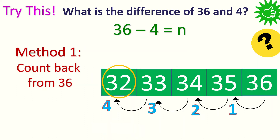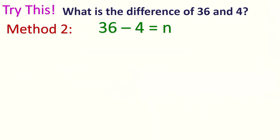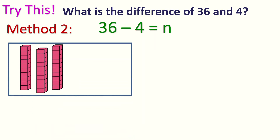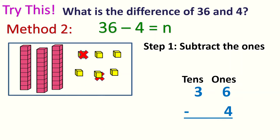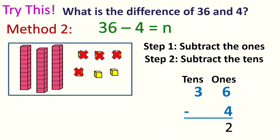Now, let's answer this using the second method. 36 is 3 tens and 6 ones. Let's write the subtraction sentence in vertical form. Subtract the ones: 6 minus 4 — let's take away 4 from 6: 1, 2, 3, 4. How many are left? 2. And let's subtract the tens: 3 minus nothing — it's still 3.